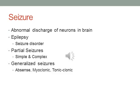Partial seizures are called that because they only deal with one part of the brain — the abnormal discharges are focal to one area. With generalized seizures, it's more spread out throughout the brain. Partial seizures are broken down into simple and complex: with a simple partial seizure the person retains consciousness, while with a complex partial seizure they go unconscious. Types of generalized seizures include absence, myoclonic, and tonic-clonic.